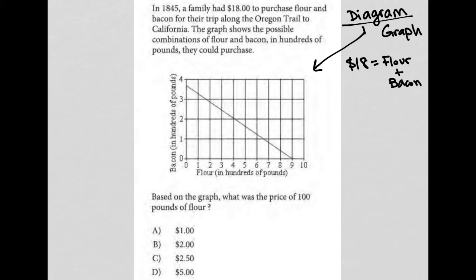The graph shows the possible combinations of flour and bacon in hundreds of pounds they could choose. Our x-axis is flour, but keep in mind that's in hundreds of pounds. And our y-axis is bacon, also in hundreds of pounds.